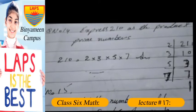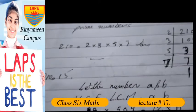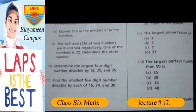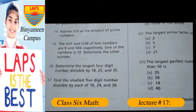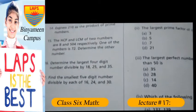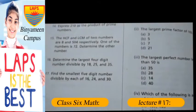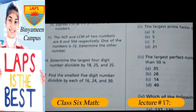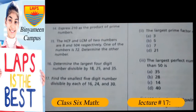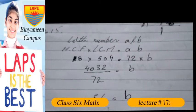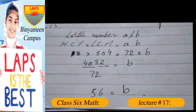Question number 15: the HCF and LCM of two numbers are 8 and 504 respectively. One of the numbers is 72, determine the other number. Let the numbers be A and B. HCF multiplied by LCM is equal to A multiplied by B.